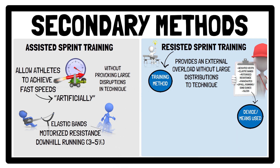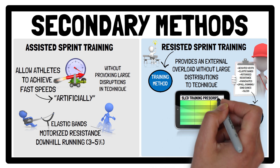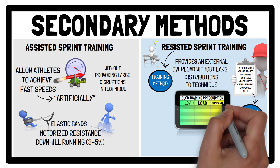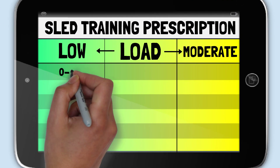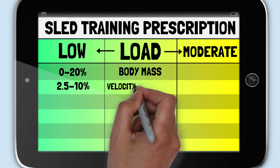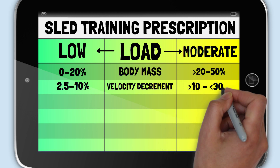When sled training is used with the intention to replicate sprint running movements using an overload, it's recommended to use lower sled loads. The use of low to moderate sled loads to enhance sprint performance can be considered a secondary method, with low sled loads classified as between 0–20% of body mass or between 2.5 and 10% velocity decrement, while moderate loads are considered between 20–50% of body mass or between 10–30% of velocity decrement.